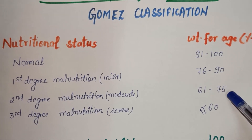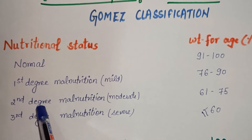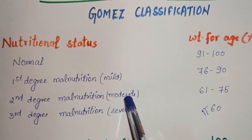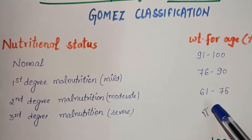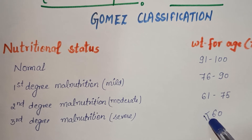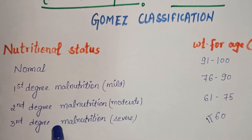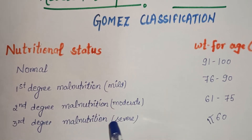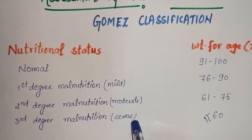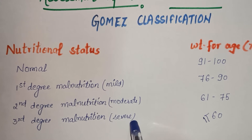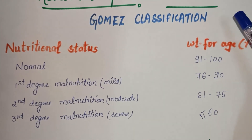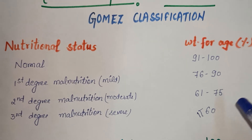If the weight-for-age percentage is 61 to 75, the child falls into second degree or moderate malnutrition. If the weight-for-age percentage is less than or equal to 60, the child falls into third degree malnutrition, meaning severe protein energy malnutrition. The child needs extra calories and treatment.